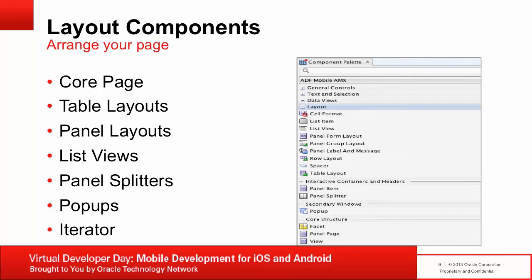ADF Mobile AMX provides layout components that let you arrange UI components on a page. You typically begin building pages with these components and then add others inside them. Some provide geometry management, such as the ability to stretch. You add a layout component by dragging and dropping from the component palette, then use the property inspector to set attributes. Key layout components are: core page structure, table layout, panel layout, list views, panel splitter, popup, and iterator.